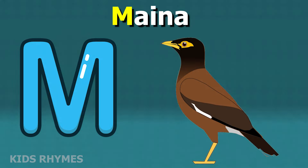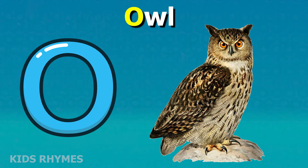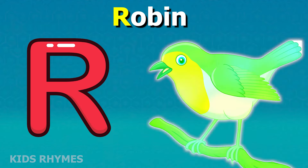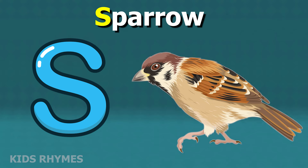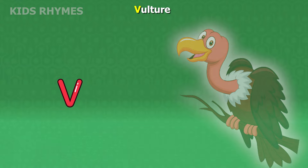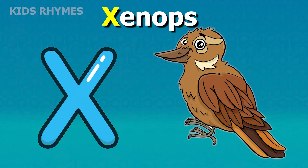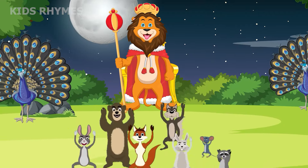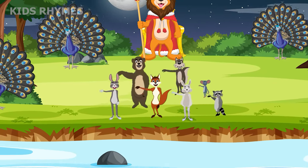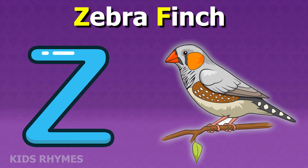M for myna, N for nightingale, O for owl, P for parrot, Q for quail, R for robin, S for sparrow, T for turkey, U for umbrellabird, V for vulture, W for woodpecker, X for xenops, Y for yellow warbler, Z for zebra finch.